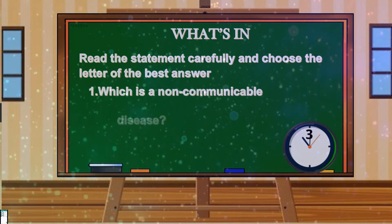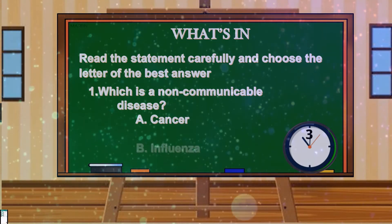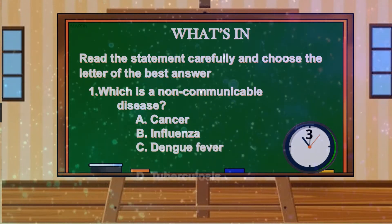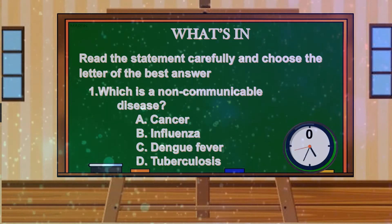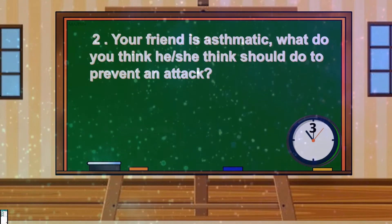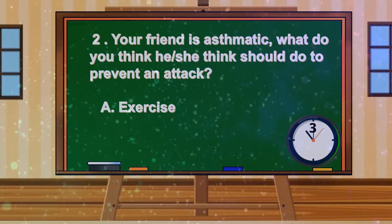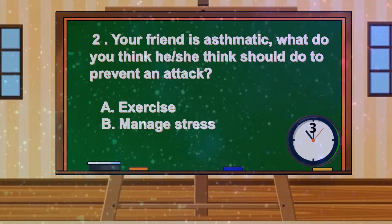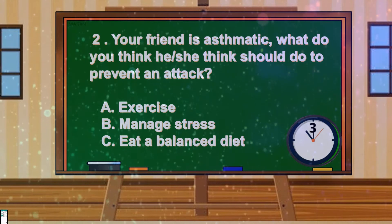Number 1. Which is a non-communicable disease? A. Cancer. B. Influenza. C. Dengue fever. D. Tuberculosis. Number 2. Your friend is asthmatic. What do you think he or she should do to prevent an attack? A. Exercise. B. Manage stress. C. Eat a balanced diet. D. All of the above.